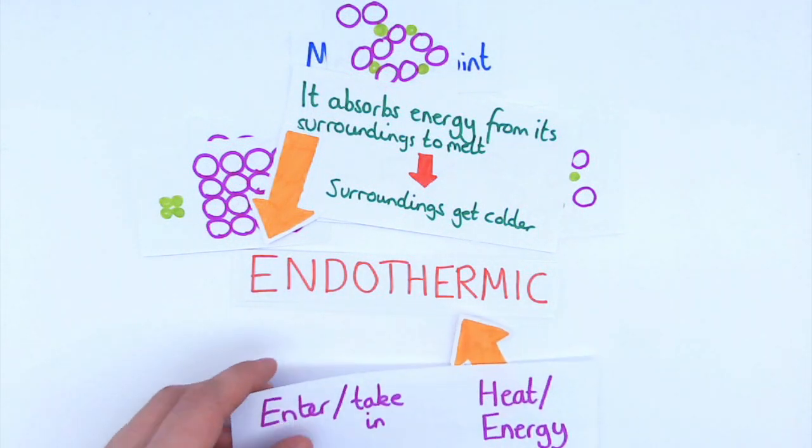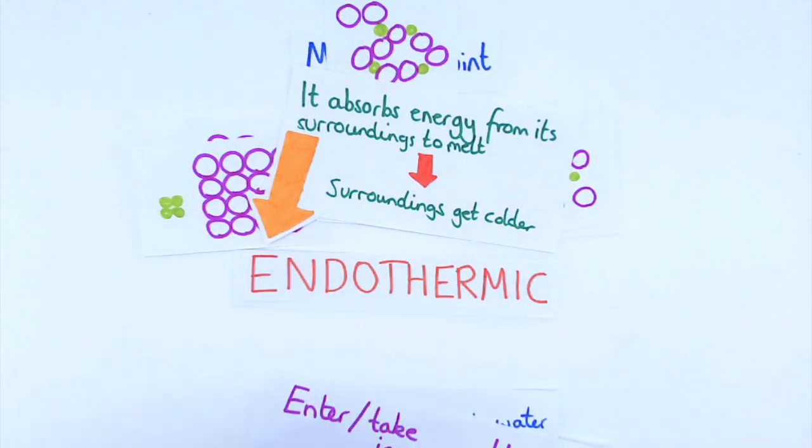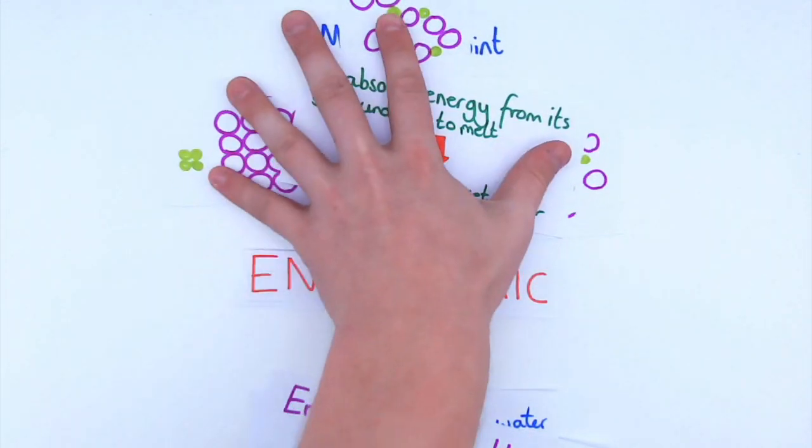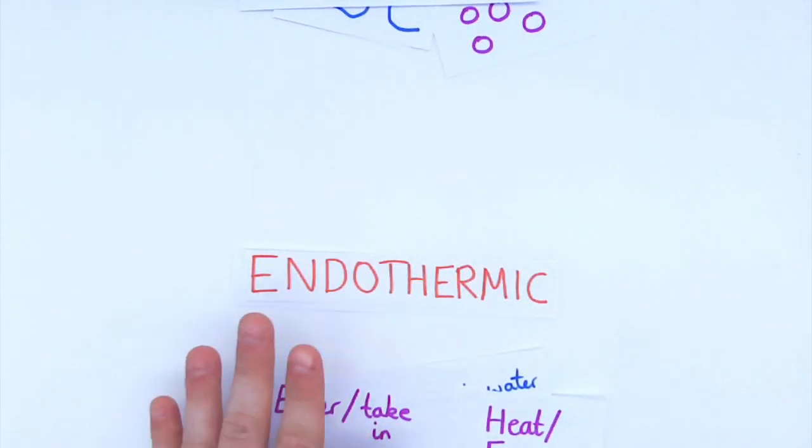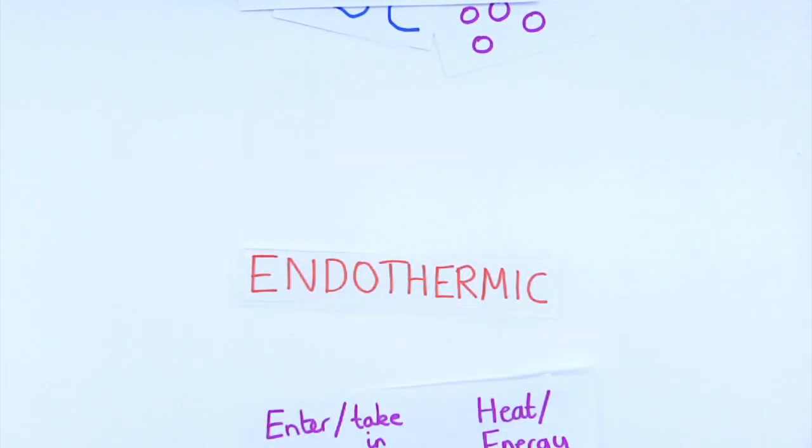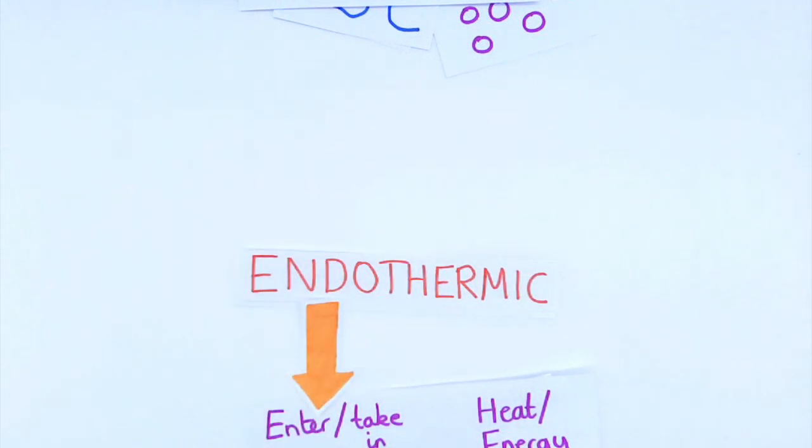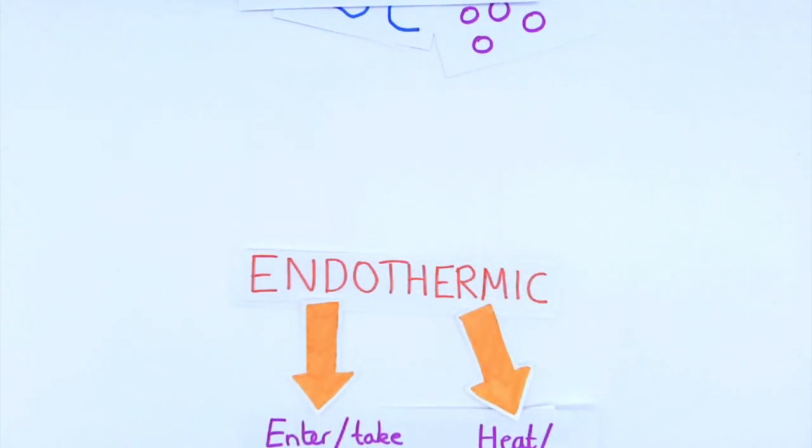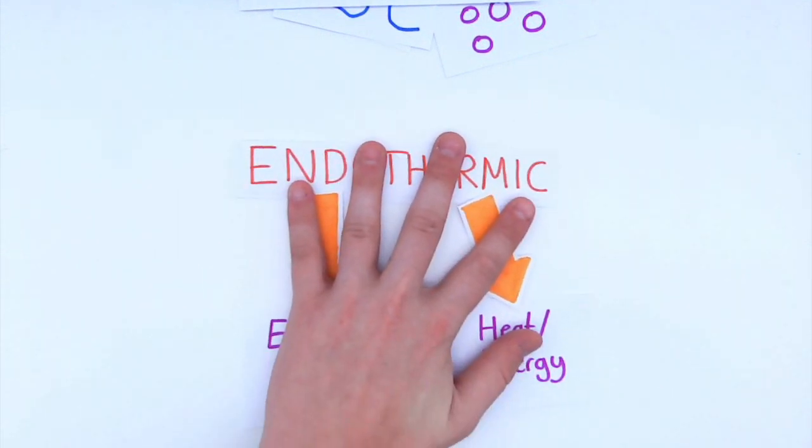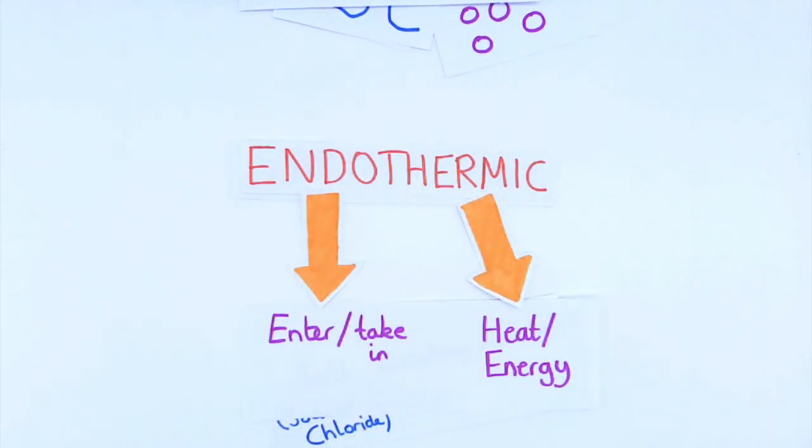What does that word endothermic mean? Well, I can break that word down into two halves. Endo means like enter or take in and thermic means heat. So both of those processes are endothermic, that means they take in heat and they can freeze our ice cream.